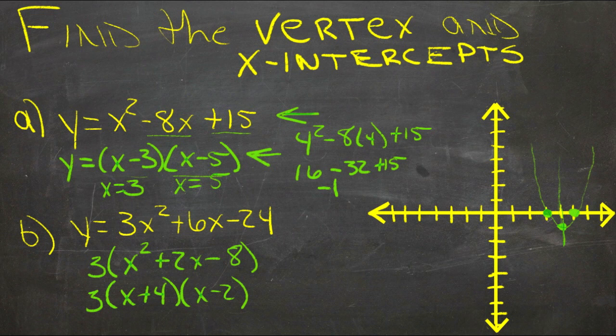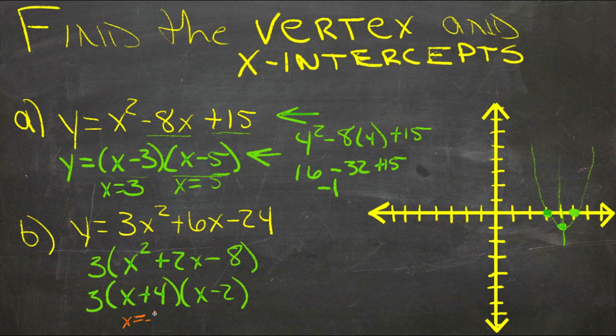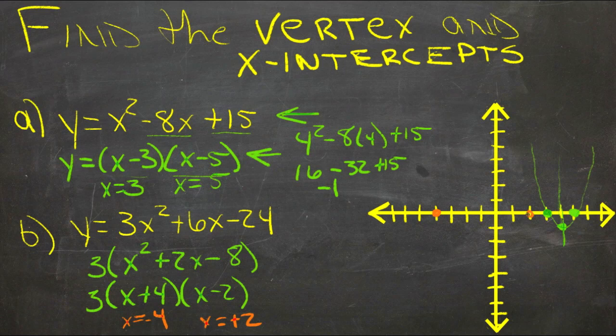Let me change colors for putting it on the graph so we don't get them confused. So we have a point at x equals negative 4 and x equals positive 2. So negative 4, positive 2.